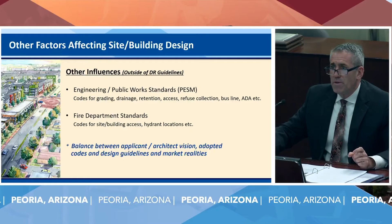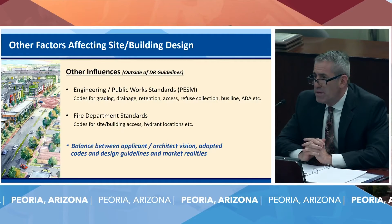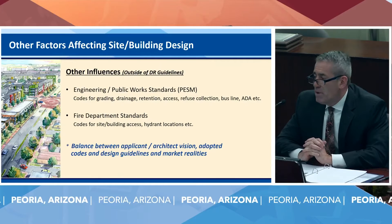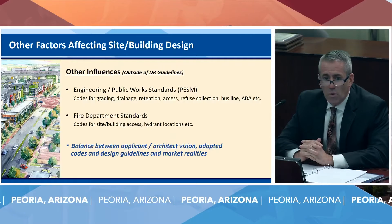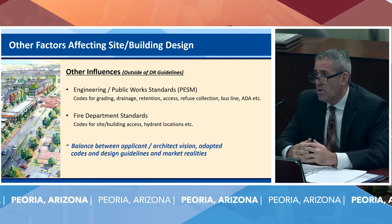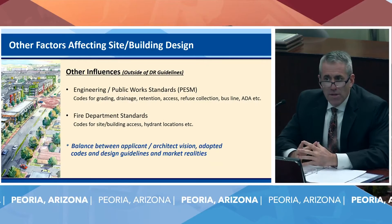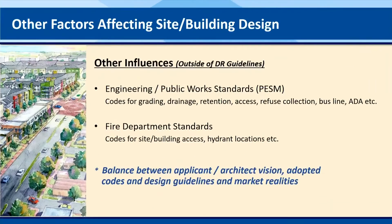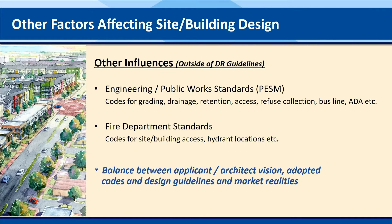Other factors affect layout and building design as well. Engineering and public works standards are regulations for grading, drainage, retention, and access — all feeding into how the site ultimately looks. We also have fire department standards and codes for hydrant locations and site design. Working with the development community is truly a balance between the project vision of the applicant or architect, our adopted codes and design guidelines, and market reality — the types of uses and their functional needs.